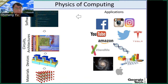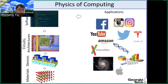Those circuits are implemented by devices, and the building block, as discussed earlier, is the transistor — in particular, the MOSFET transistor. If you look into the transistor, what it's made of is silicon material, because all transistors today are silicon transistors. The crystal structure of silicon shows those atoms — electrons are going to flow through the silicon — and this is the foundation of all the computing running on top of that.